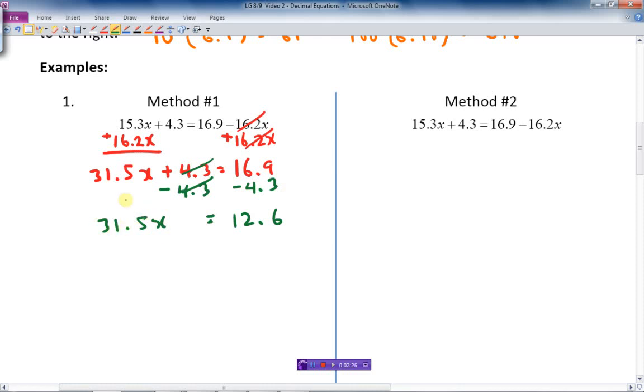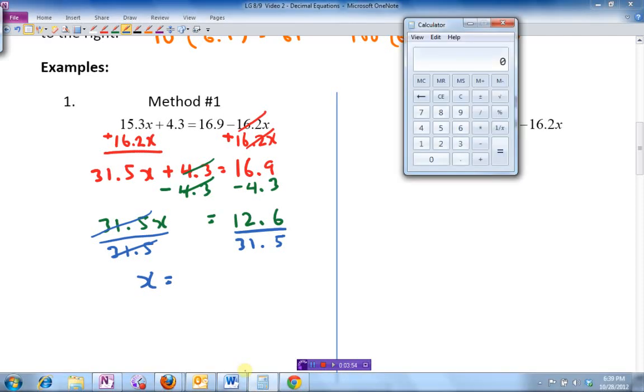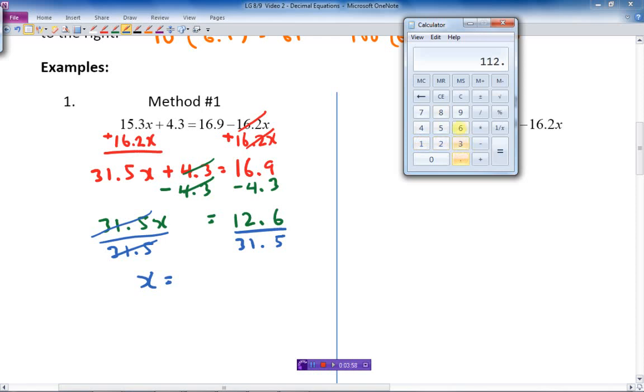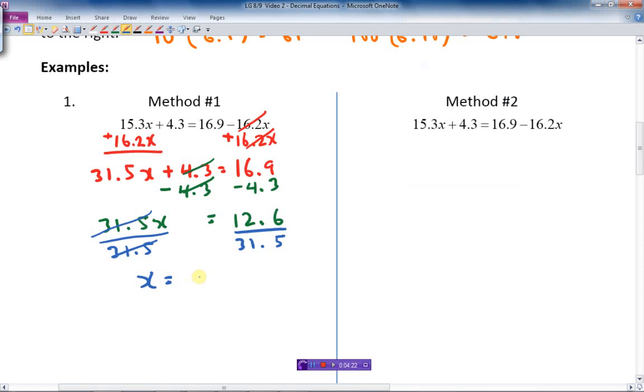Now, I'm going to get rid of that 31.5. It's multiplying the x, so I'm going to divide by 31.5. Same thing to both sides. That cancels out the 31.5, leaves me at x all by itself. Let's bring up a calculator. We're going to do 12.6 divided by 31.5 equals, and there we go. It's 0.28. Let's say round it off to 4. And we'll leave it at that.